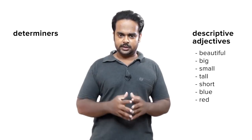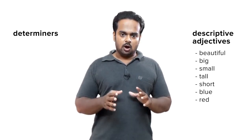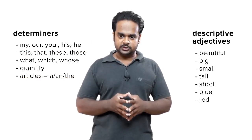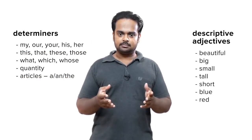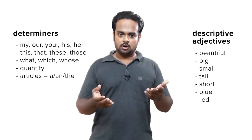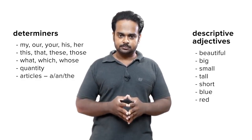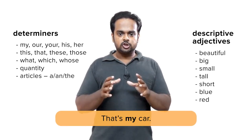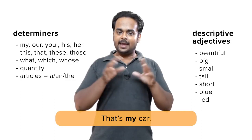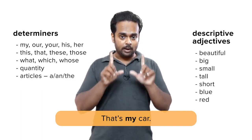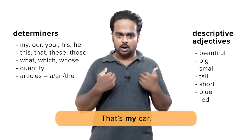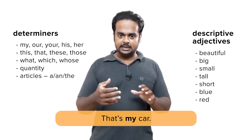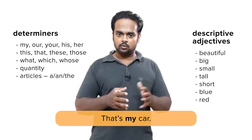So what are determiners then? Well, determiners are a small group of grammar words that act as adjectives — words like my, our, your, his, her, etc. are determiners. When I say 'that's my car,' for example, the word my shows that I'm not talking about any car, I'm talking about one particular car, my car. So the word my acts as an adjective by giving information about the noun car.